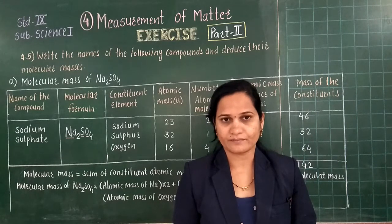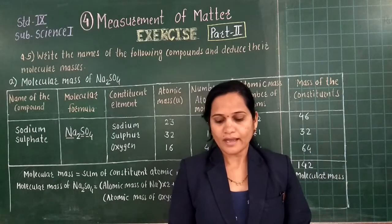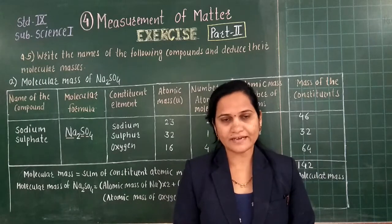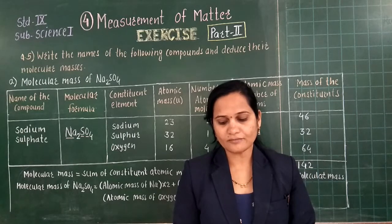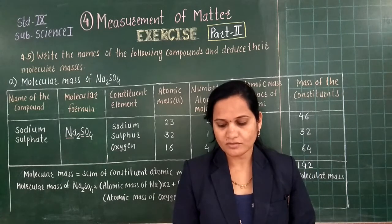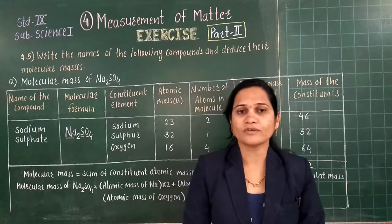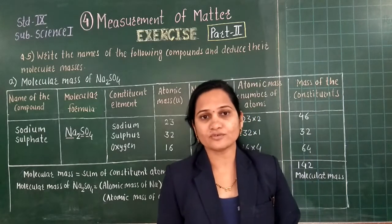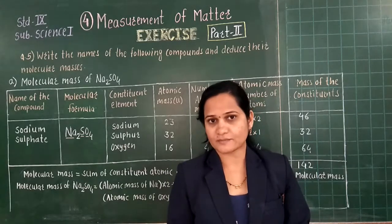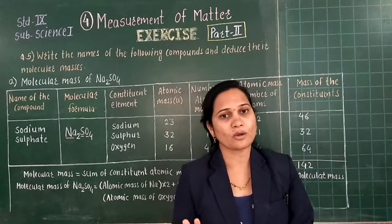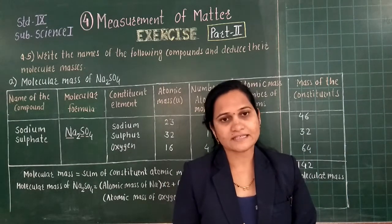Now let us see question number B. N is a bivalent metal — bivalent means having valency 2. Write down the steps to find the chemical formulae of its compounds formed with the radicals sulfate and phosphate. In the last lecture we discussed how to deduce the chemical formulae, and I taught you total 4 steps to deduce or write the chemical formulae of a compound. By using those 4 steps, you can easily write the answer to this question.